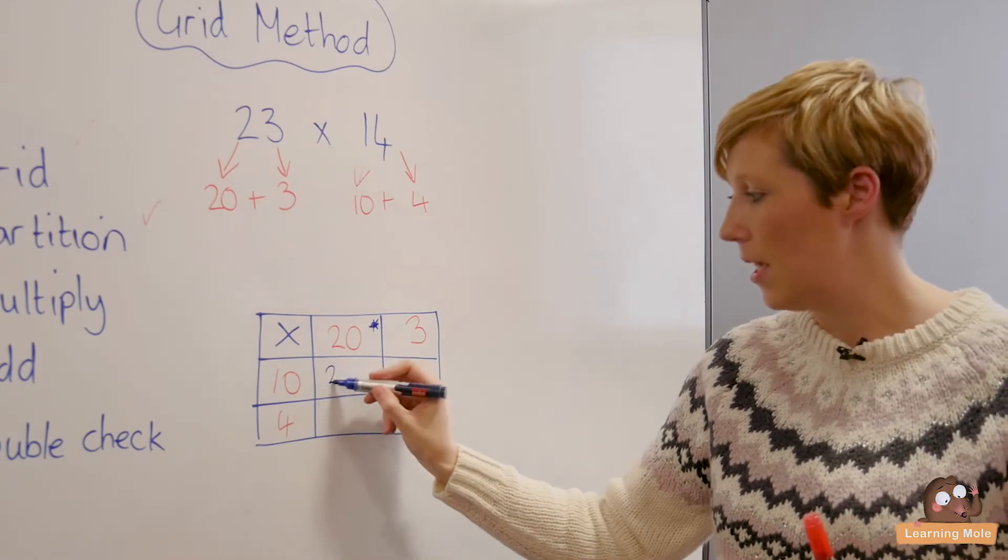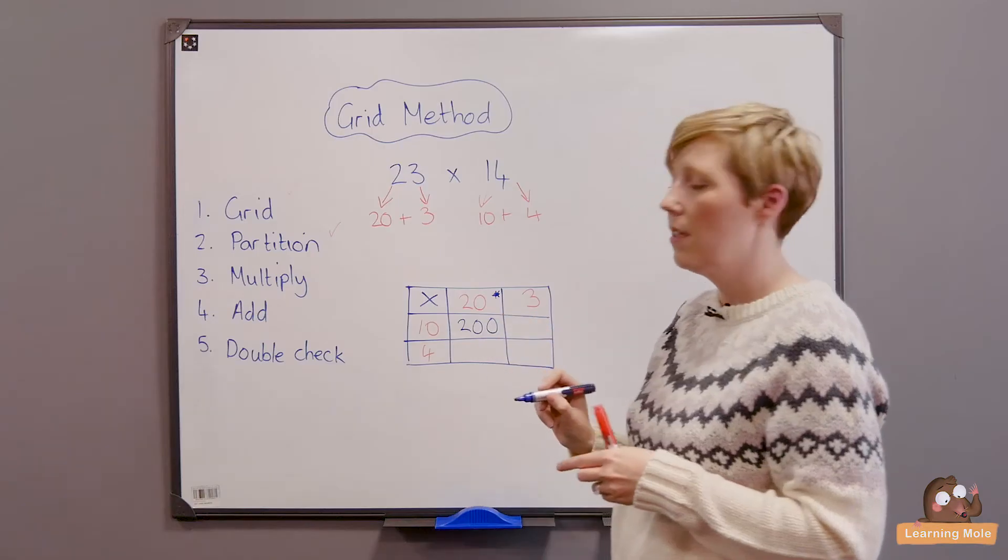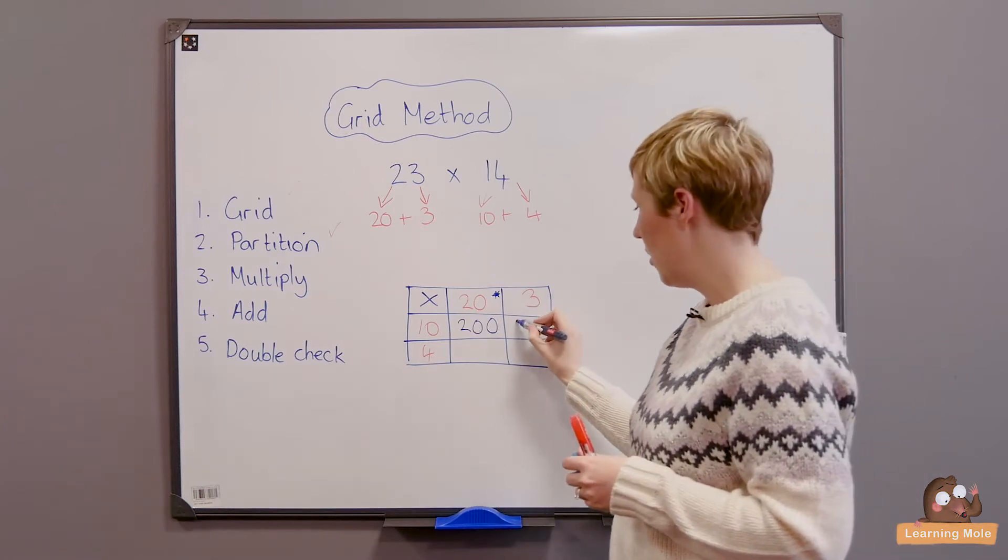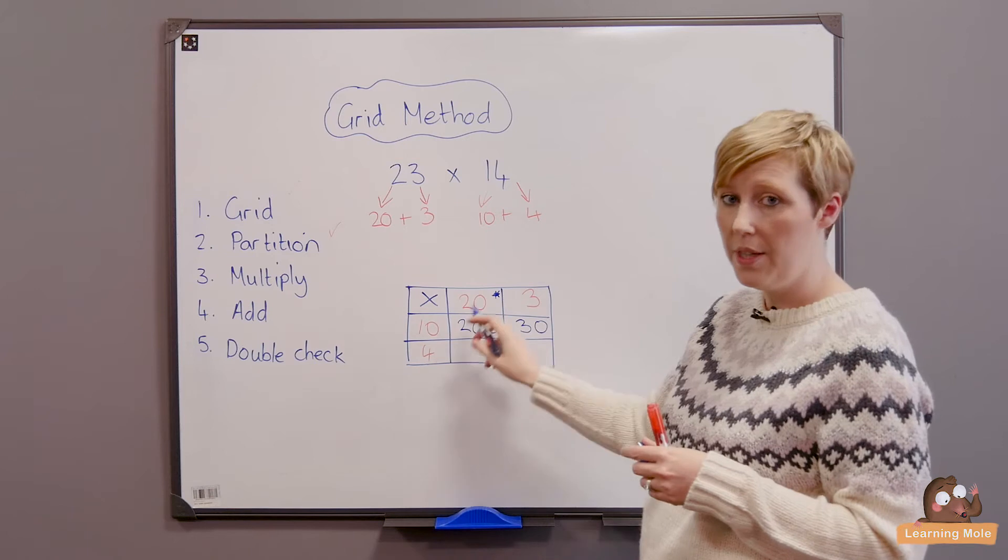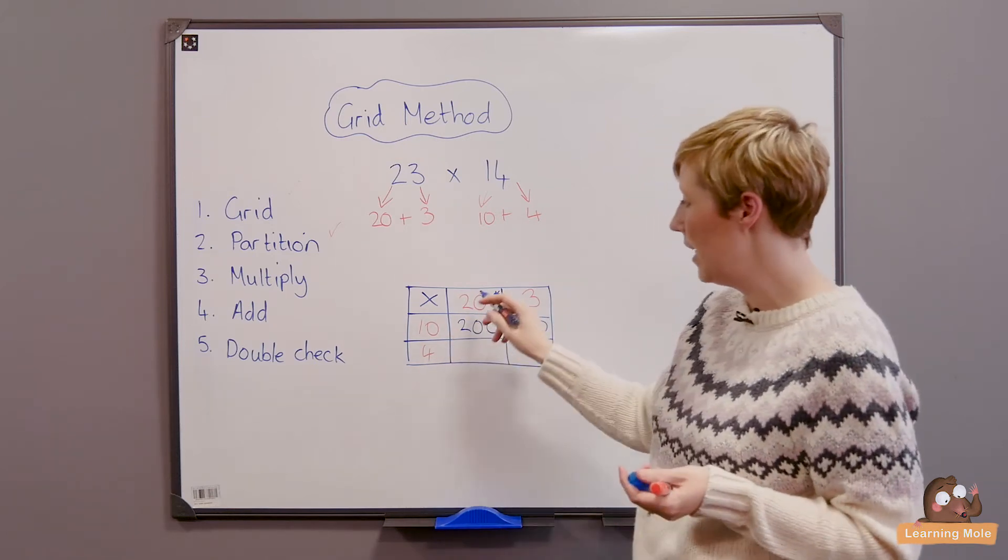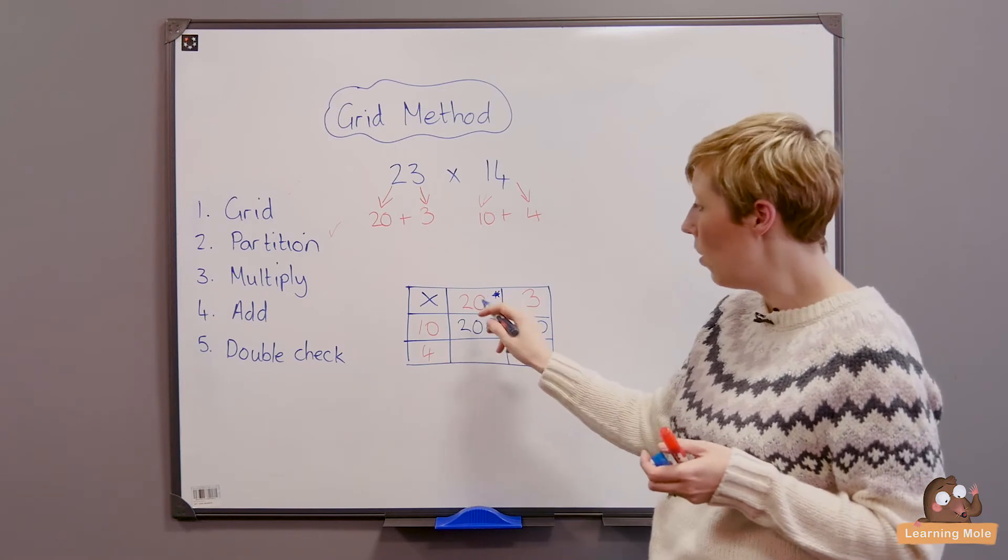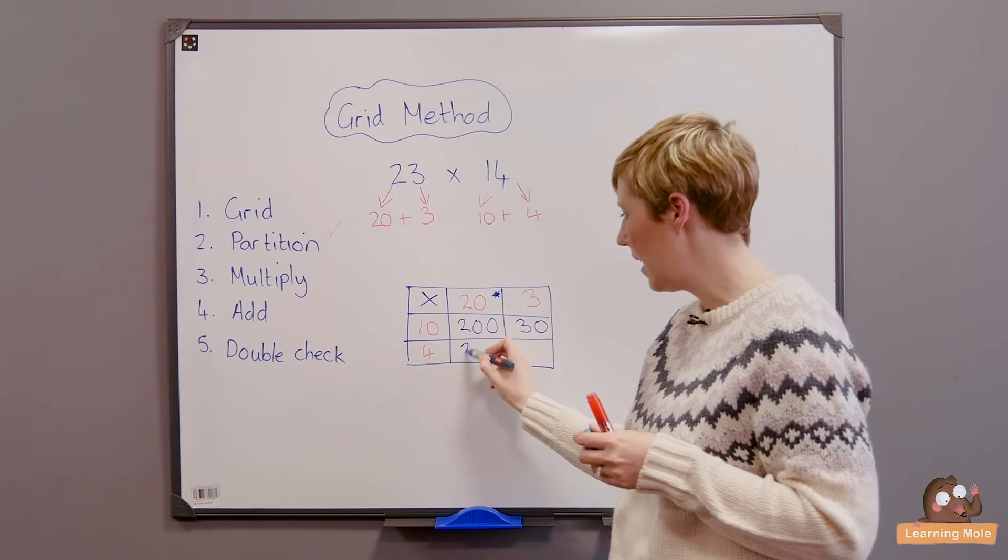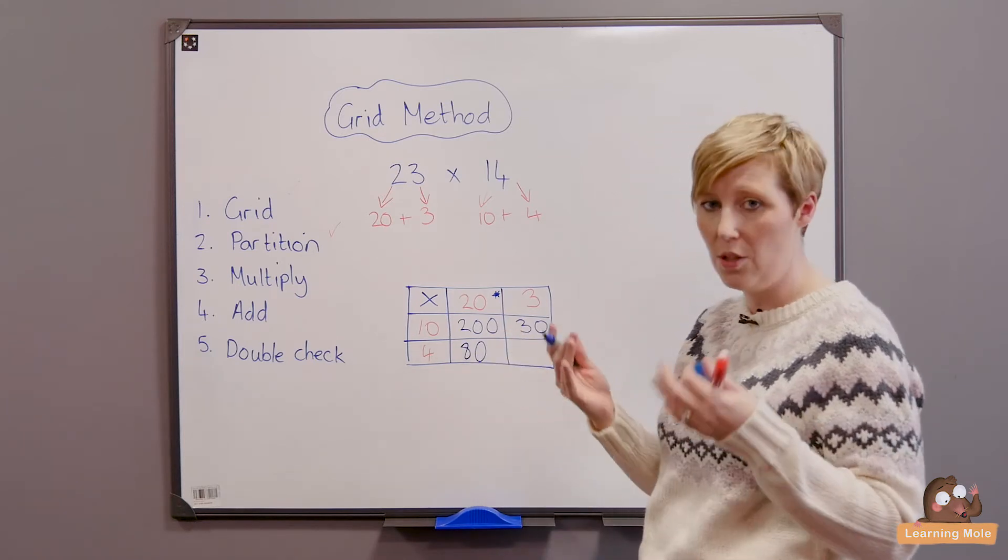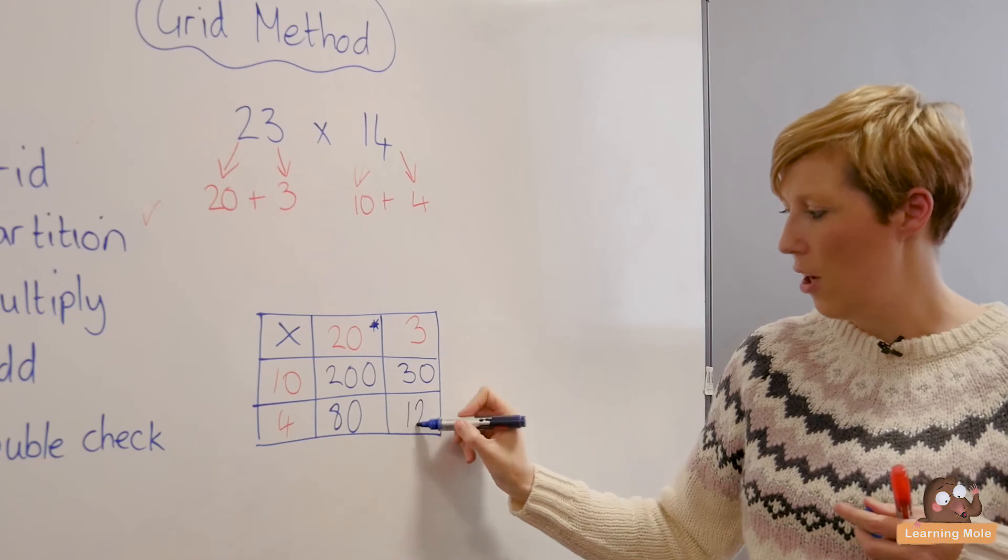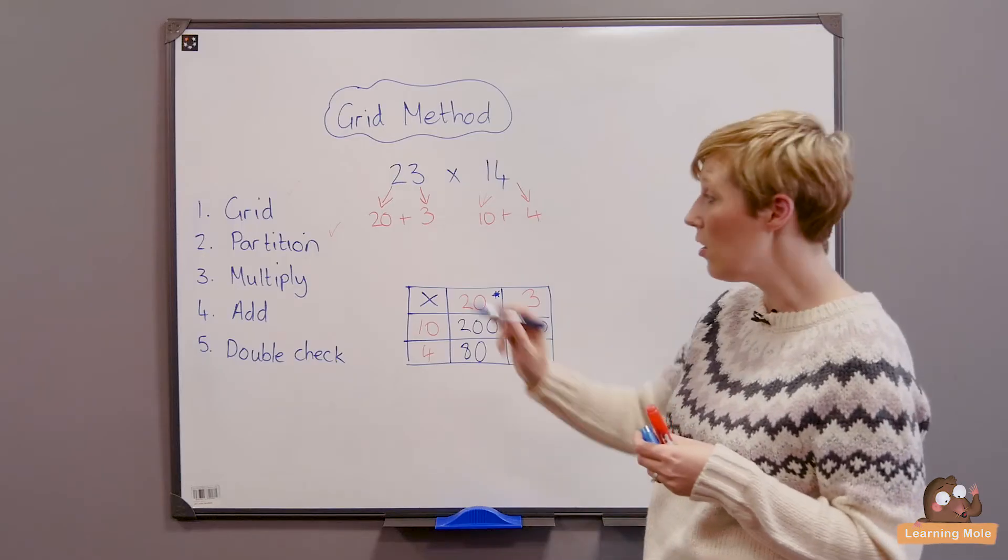I've got 4 times 20. So I don't know my 20 times tables, but I know that 4 times 2 is 8, and I've got one 0 here, so I know it's one multiple of 10. So 4 times 2 is 8, and I'm going to add my 0 on because I know it's a multiple of 10. And then 4 times 3, which is 12.